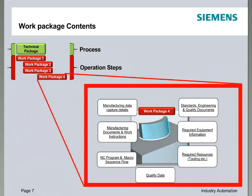A work package to us is typically a step in a process. We think of a routine or process as being a technical package, and every product that you make would normally have a technical package — a routine and a series of steps. Some of those steps would be CNC steps. So we think of the process as the technical package, and the individual steps within the process as the work packages. These individual work packages are what we load into NX and author within NX.